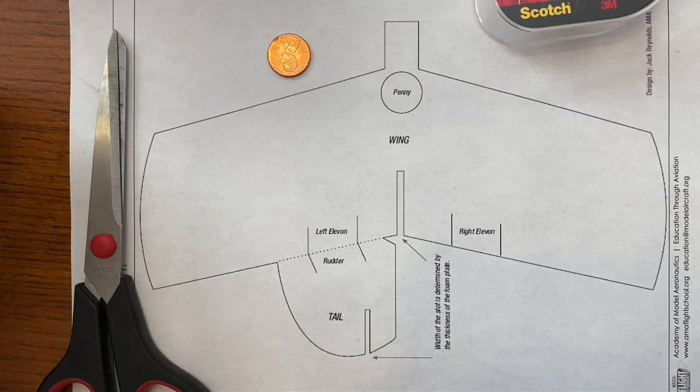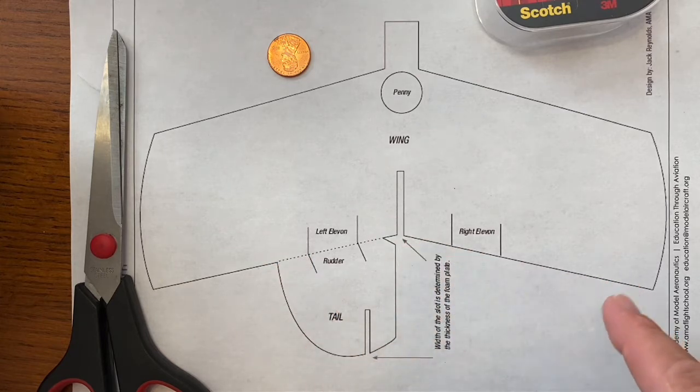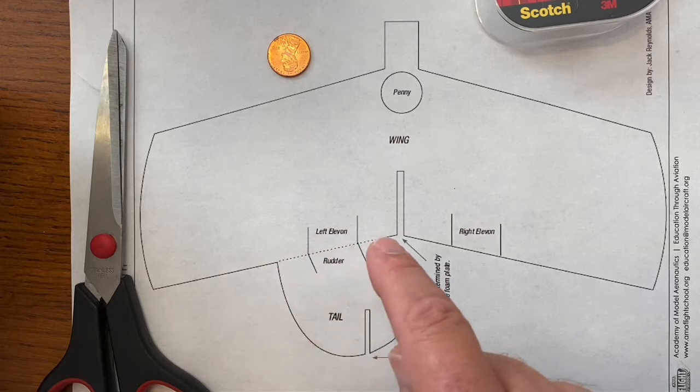The template has, down here at the bottom, a tail section. So as you trace it, trace around the tail section on the foam plate. But when you cut it out, you can go ahead and cut straight down this line right here so that you have a separate tail section.